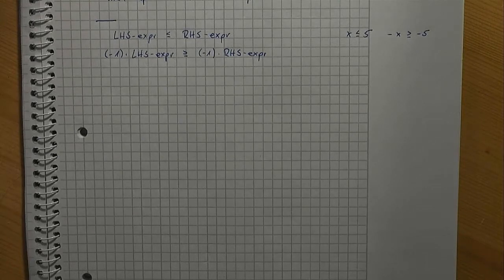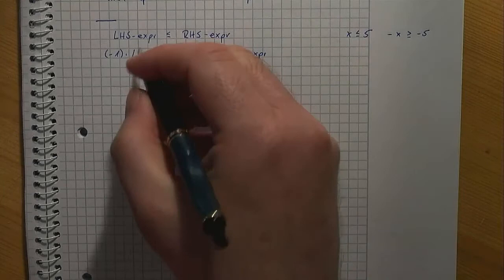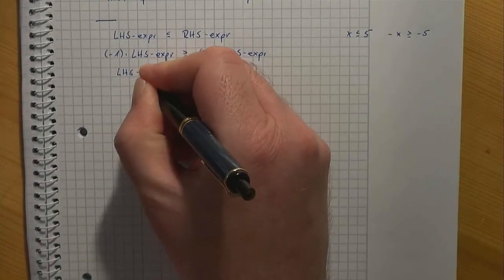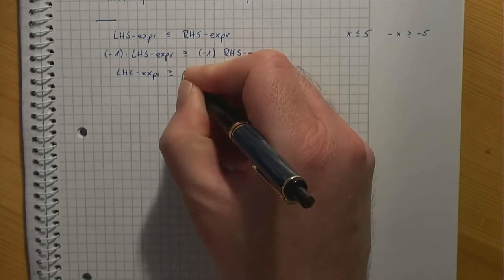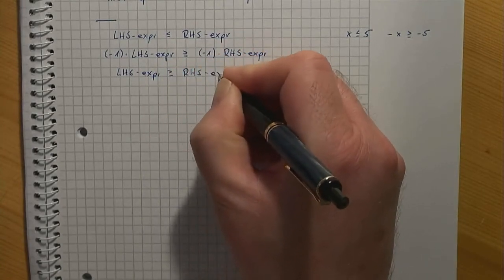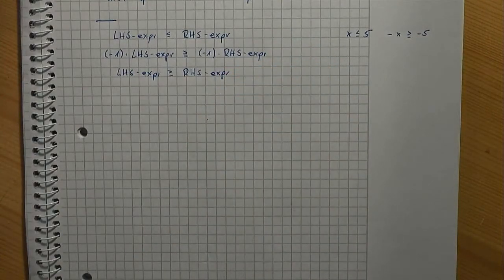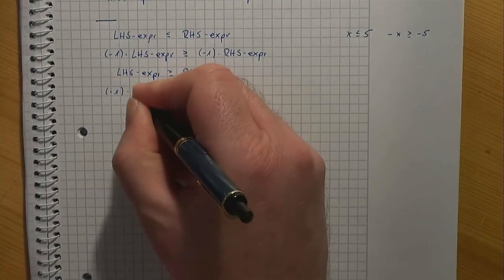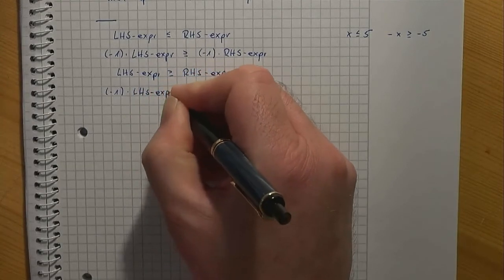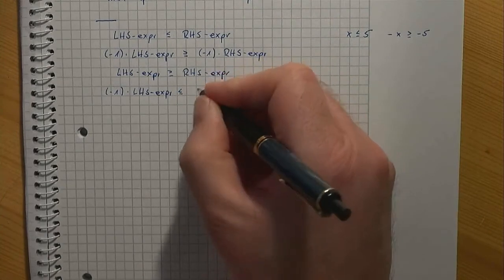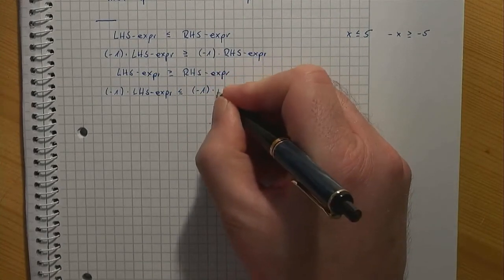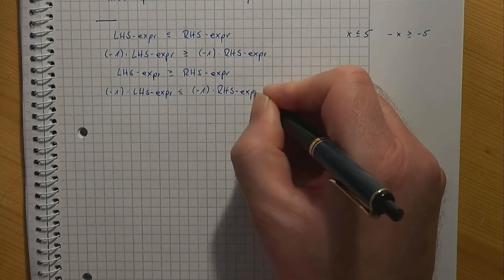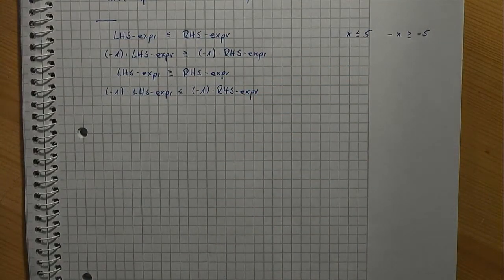Of course, this trick works in both directions: a left-hand side expression ≥ right-hand side expression is equivalently written as minus one times the left-hand side expression ≤ minus one times the right-hand side expression. Such a transformation is useful for dualizing a linear program, for instance, which is a topic to be treated in a different video.